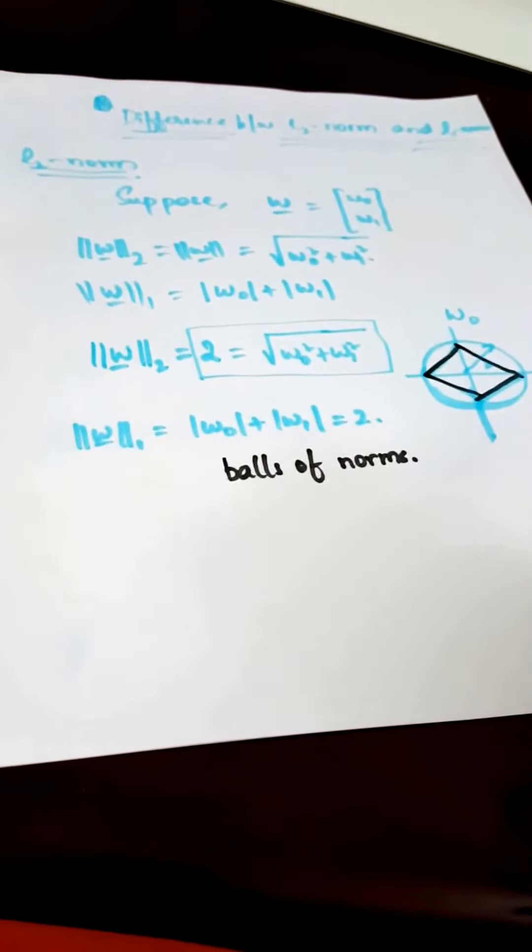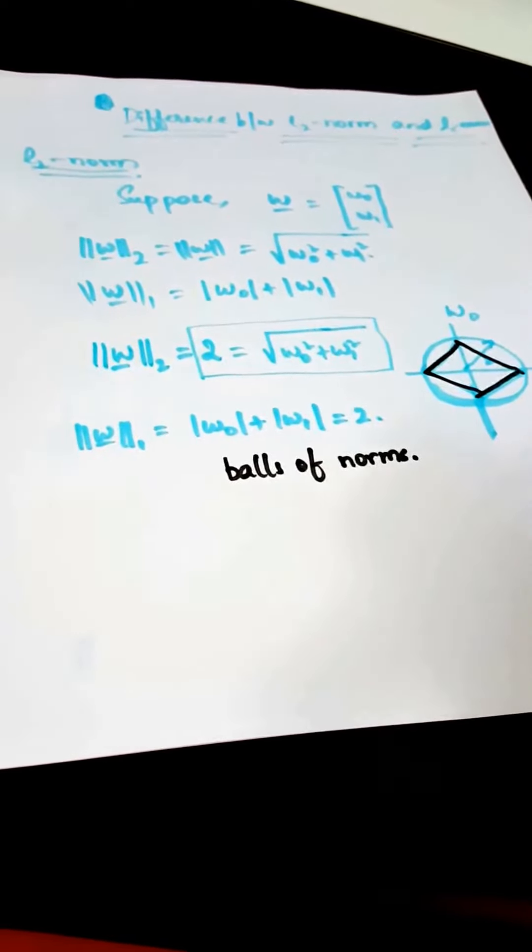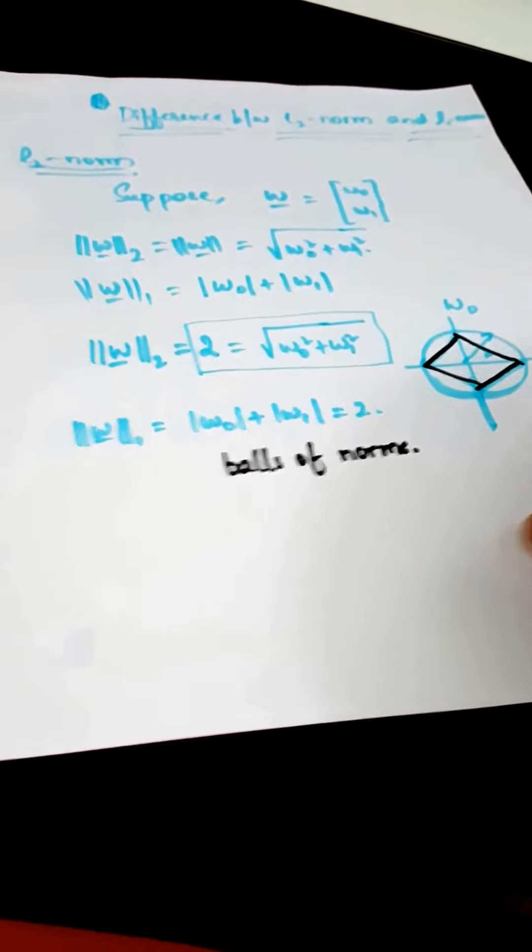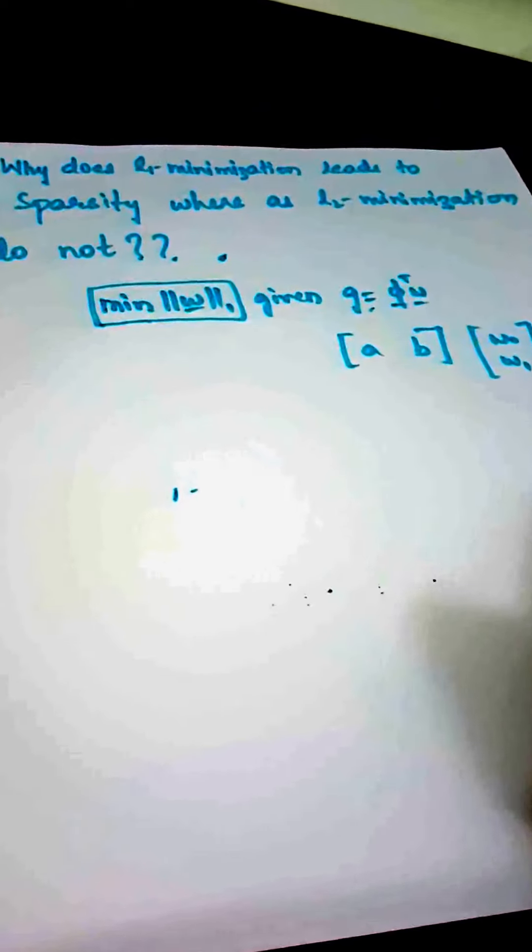So now that we know what L1 and L2 norms are, let's move on to a different and very common question: Why does L1 norm minimization give us sparsity, whereas L2 minimization doesn't?